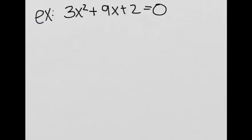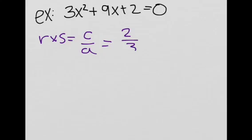Let's do an example to make sense of this. We're supposed to find r times s. So r times s is equal to c over a, which means that this is equal to two over three. So the product of the solutions is two thirds.